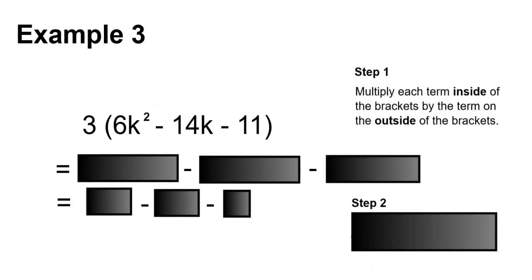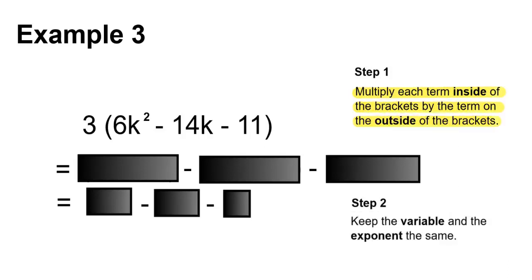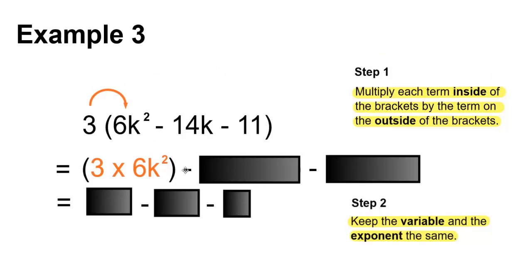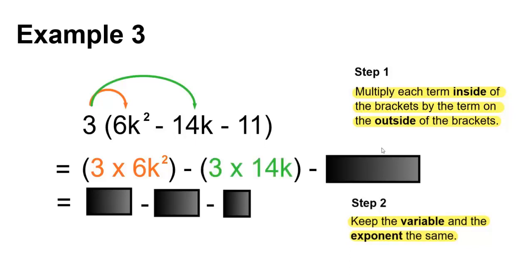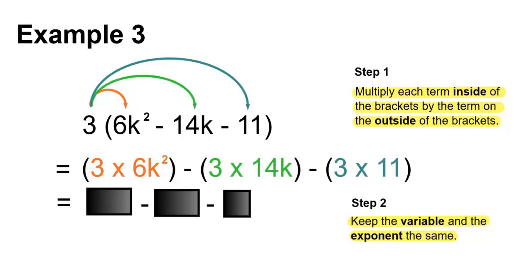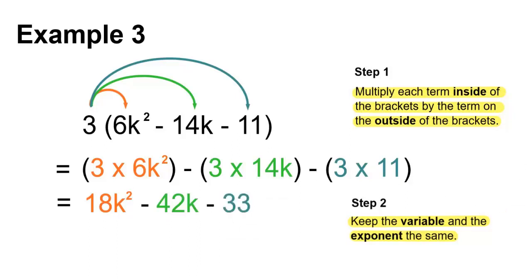Example 3: 3 times 6k squared. Step 1: Multiply each term inside the brackets by the term on the outside of the brackets. Step 2: Keep the variable and the exponent the same. 3 times 6k squared minus 3 times 14k minus 3 times 11. 3 times 6 is 18, giving us 18k squared, minus 3 times 14 is 42, giving us 42k, minus 3 times 11 is 33.